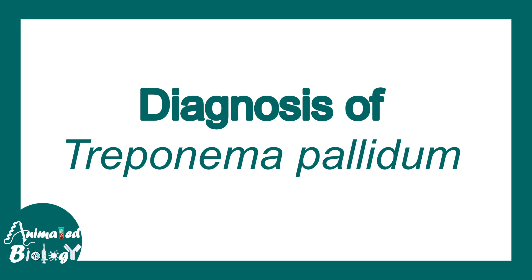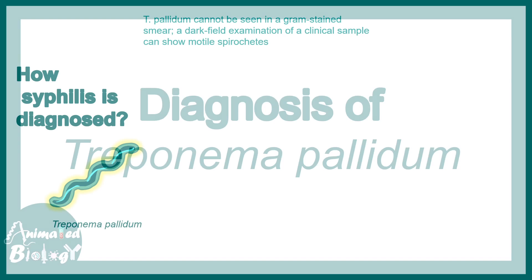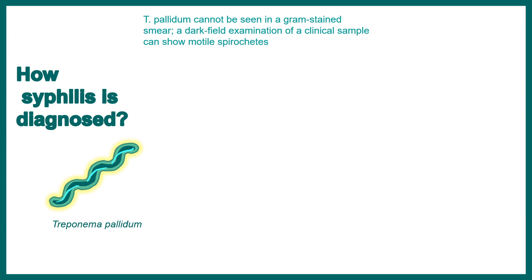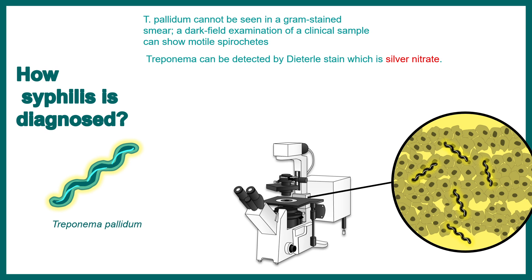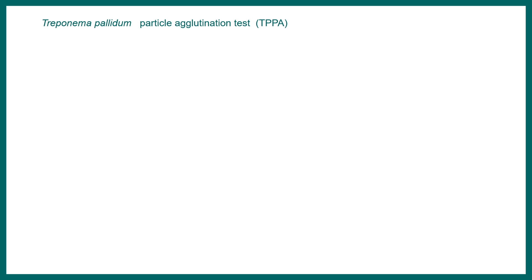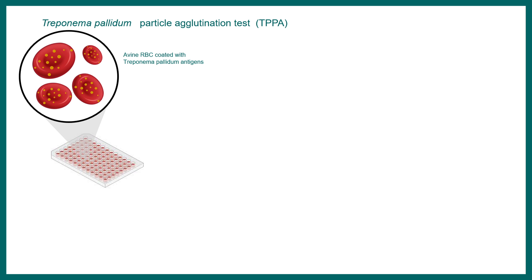Regarding diagnosis of Treponema pallidum: it cannot be gram-stained well despite being gram-negative, so a silver nitrate stain is preferred — in a yellowish background, the bacteria appear black with this stain. Treponema pallidum can be detected more definitively with the particle agglutination test, or TPPA. In this test, avian RBCs coated with Treponema pallidum antigens are added to a microtiter plate.